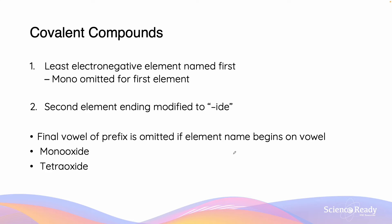The naming conventions for covalent substances are as follows. First, the least electronegative element name is named first. In the covalent compound, if there is only one atom of the first element, we do not need to include the mono prefix and it is omitted for the first element. Next, the second element's ending is modified to "-ide". Note that not all elements end in "-ine", so for example with oxygen, we would change the "-gen" part into "-ide". It is also important to consider that the final vowel of the prefix is omitted if the element name begins with that vowel.